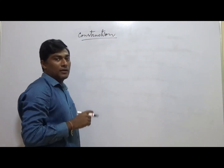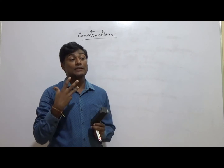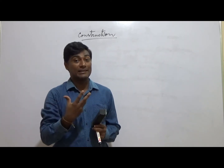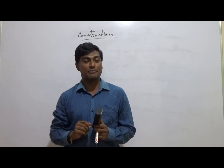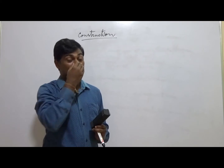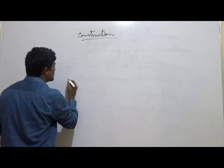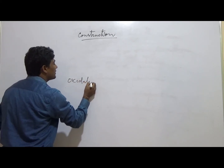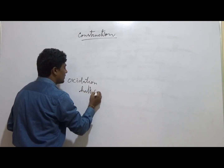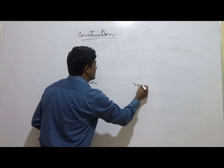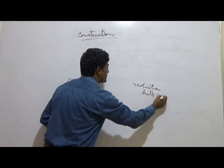How do we construct an electrochemical cell? An electrochemical cell consists of two half cells. One half cell is called the oxidation half cell, and the other is called the reduction half cell.